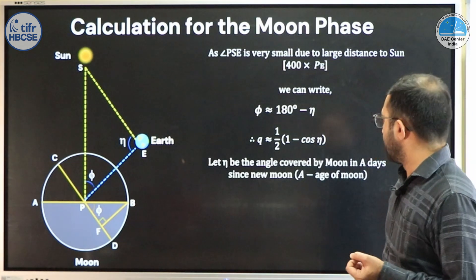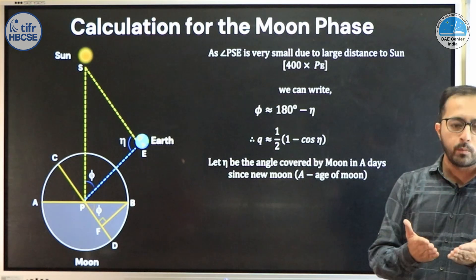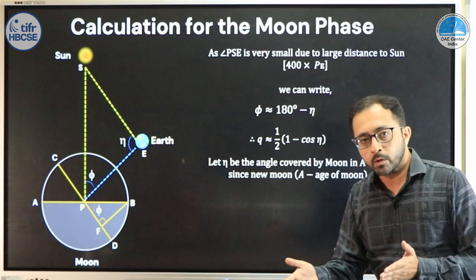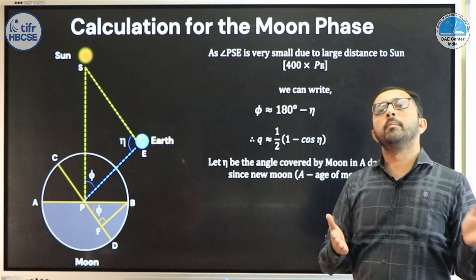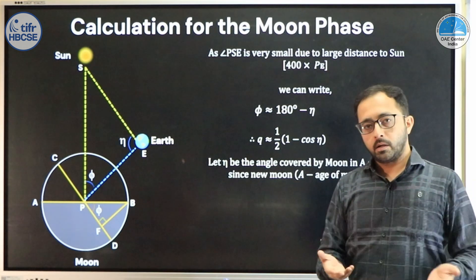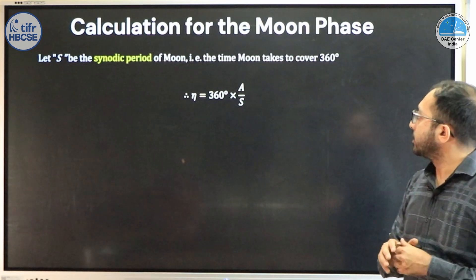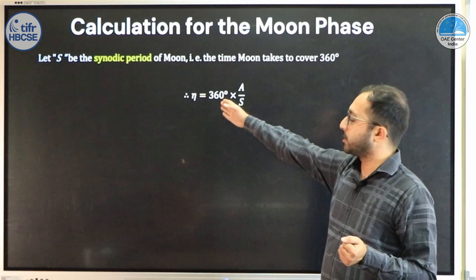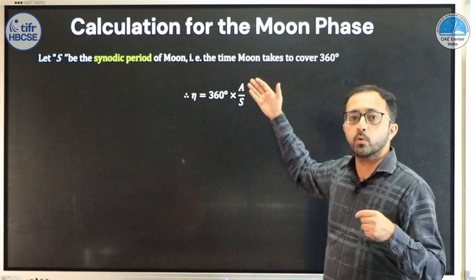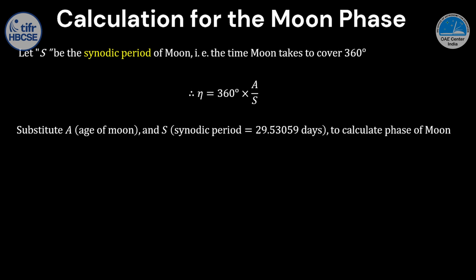How do we measure eta? Let eta be the angle covered by the moon in A days since the new moon, where A is the age of the moon — the number of days that have passed since the new moon. So eta equals 0 at new moon, 180 at full moon, 90 at the first quarter, and −90 at the third quarter. Let S be the synodic period of the moon — the time from new moon to new moon. Then the elongation eta equals 360 × A / S. By substituting the age of the moon and the synodic period, we can easily calculate the phase of the moon.